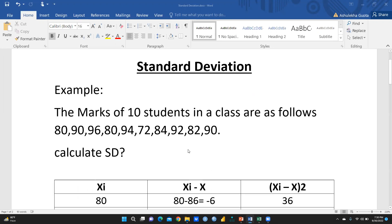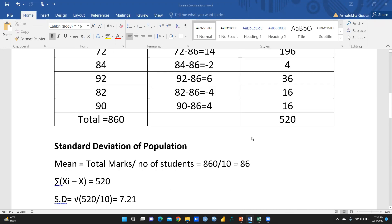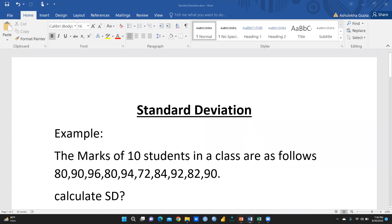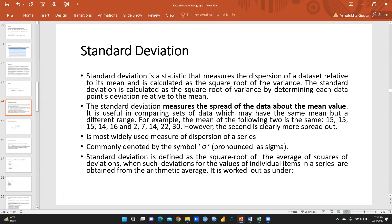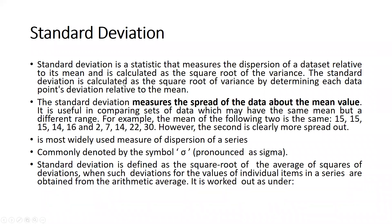Let me start with one simple example. But before that, here is one important piece of information: standard deviation is a statistic that measures the dispersion of a data set relative to its mean, and it is calculated as the square root of the variance — specifically, the square root of variance by determining each data point's deviation relative to the mean. The standard deviation measures the spread of the data about the mean value, and it is useful in comparing sets of data which may have the same mean but a different range.